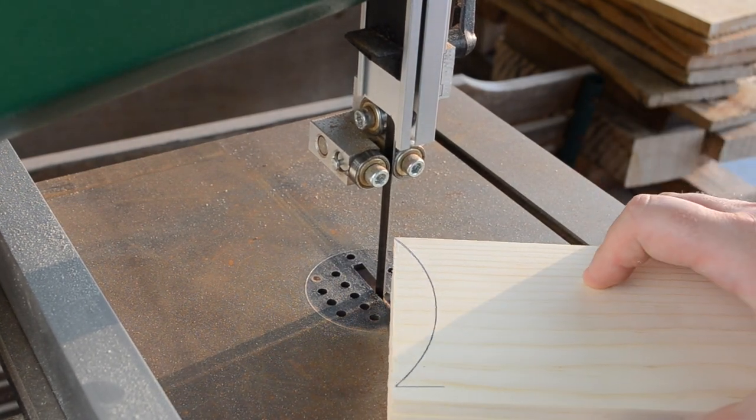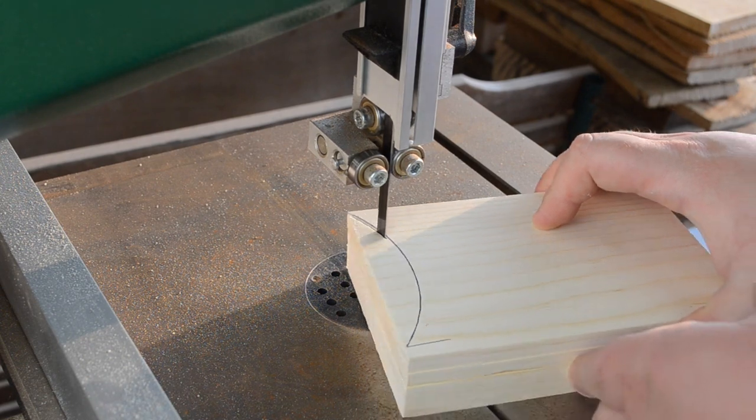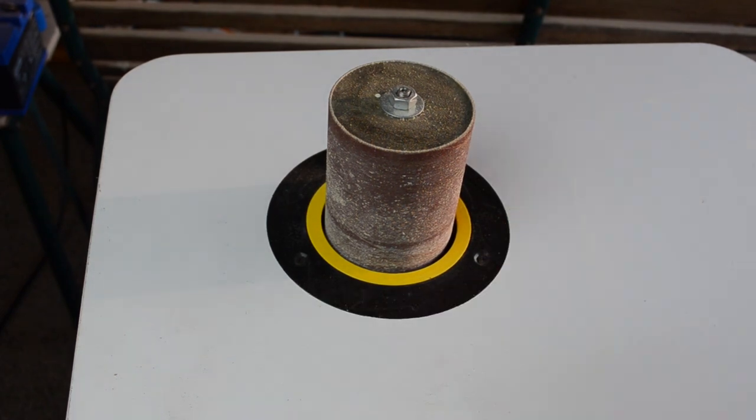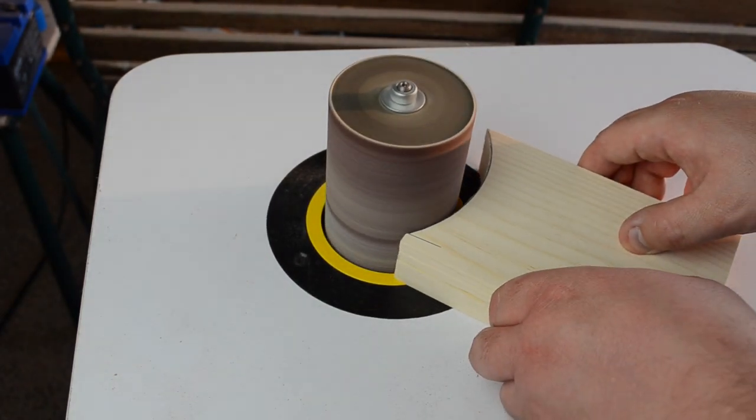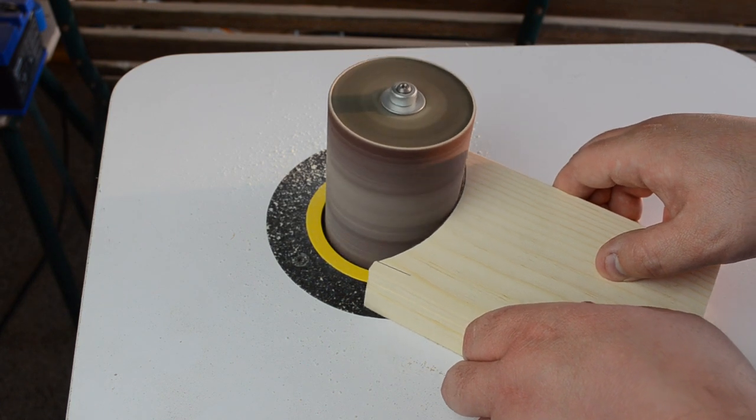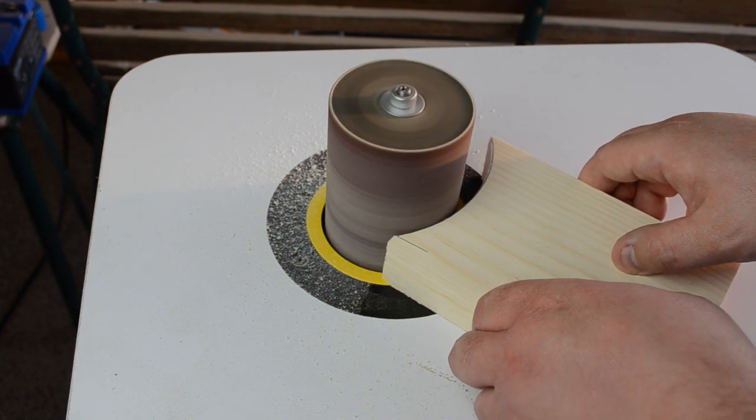I then could take all four pieces at once to the bandsaw and cut out the curve. I then smoothed it out over at the oscillating spindle sander. If you don't have one of these, a drum inside of a hand drill or a drill press works just as good, or you can sand it by hand.